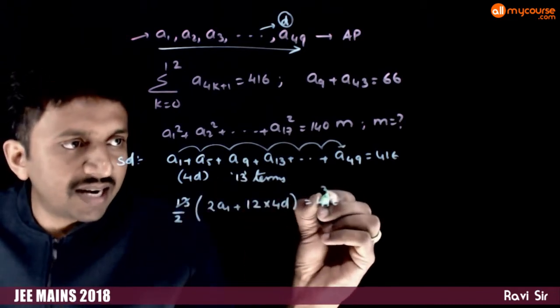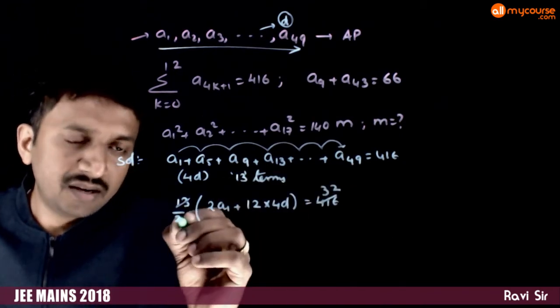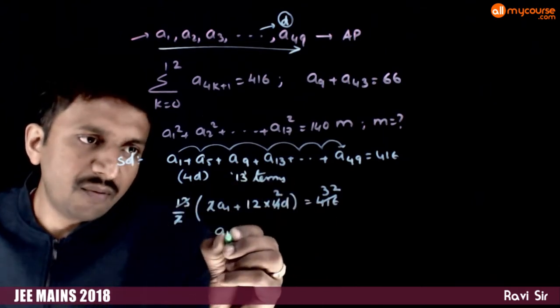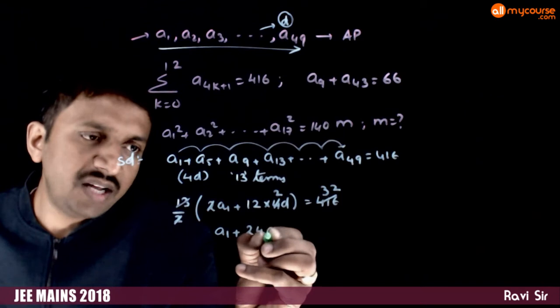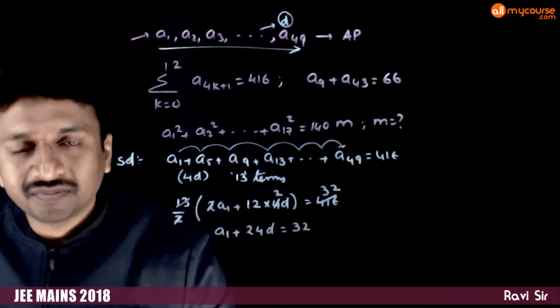You get a1 plus 24d is equal to 32. This is one equation. And what is the next equation?